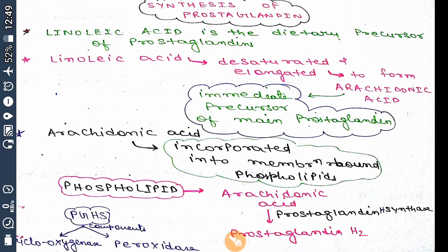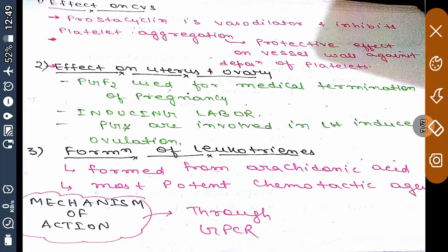Now coming to the functions of prostaglandin. First, we will discuss the effect on the cardiovascular system. Prostacycline is a chemical compound formed from prostaglandin.